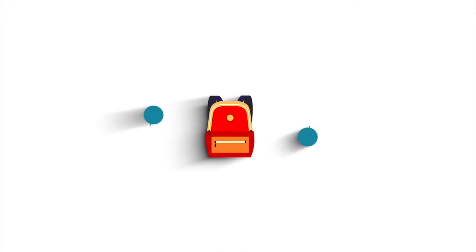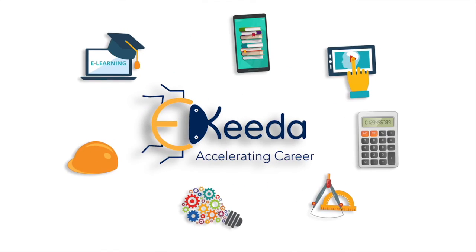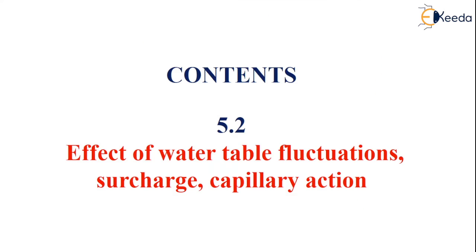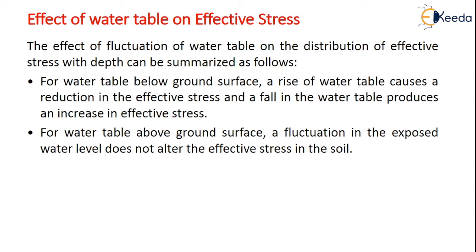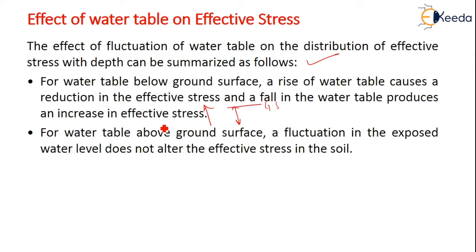What is the effect of water table on effective stress? The effect of fluctuation — that is, whether the water table is increasing or decreasing — on the distribution of effective stress with depth can be summarized as follows: if the water table is below the ground surface, a rise of the water table causes a reduction in effective stress, and a fall in the water table produces an increase in effective stress.